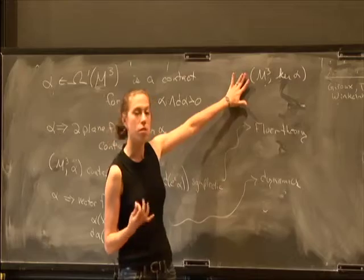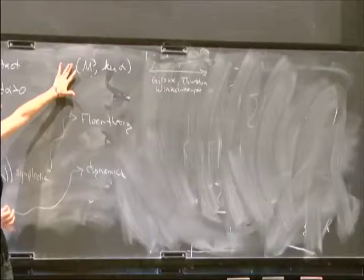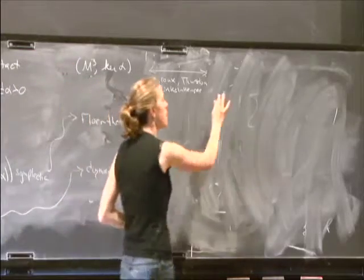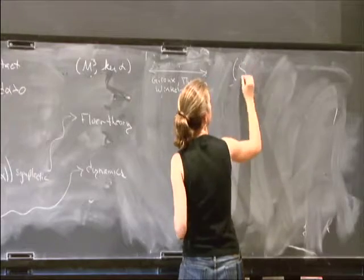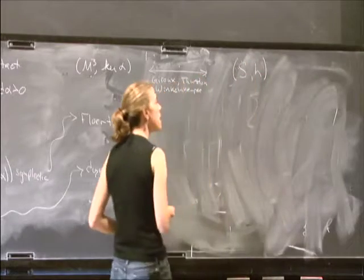The idea is that if you have a contact manifold, which we think of just as a pair, this manifold and this two-plane field, then you could equivalently study a different kind of pair. And this other kind of pair, (S,h), where here,